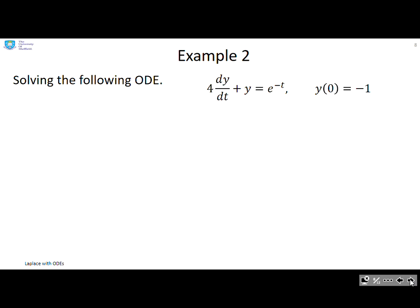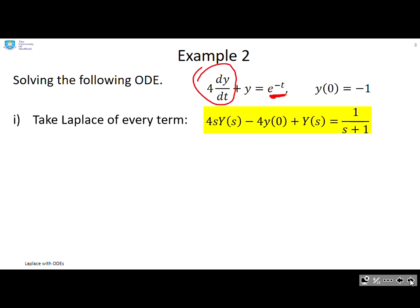Example 2: this is exactly the same as the previous one. The only difference is I've made the right-hand side slightly messier. So first, take Laplace of every term. The 4·dy/dt, if I take Laplace of that, I get those. The y corresponds to that. And the e^(-t) corresponds to that.